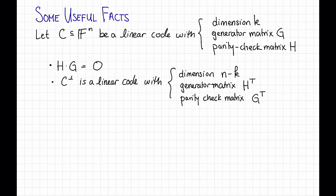and parity check matrix G transpose. So same thing. We take the generator matrix for C, and that becomes the parity check matrix for C perp.